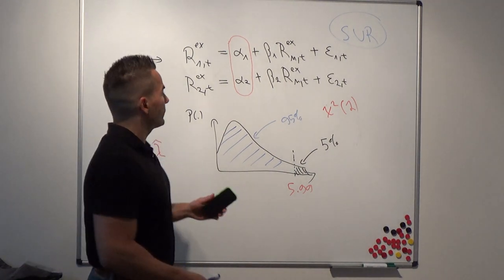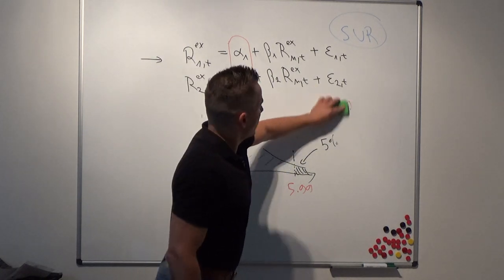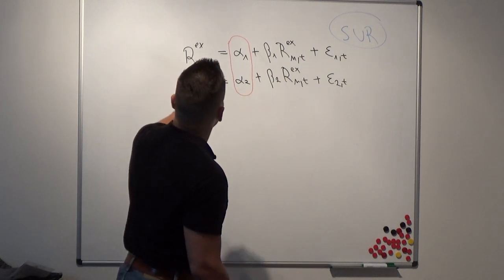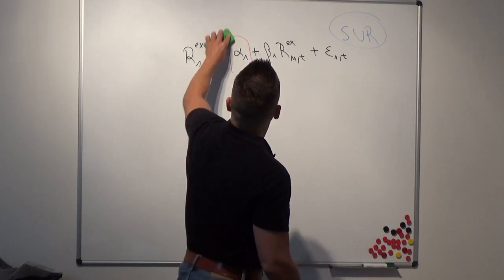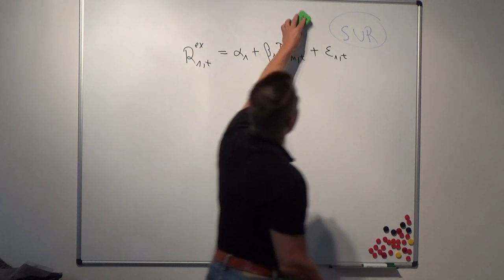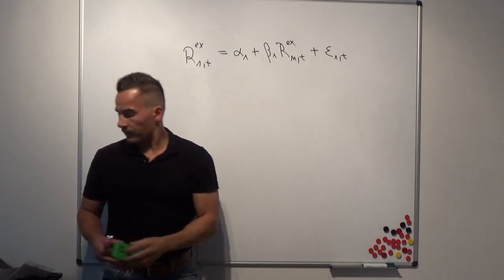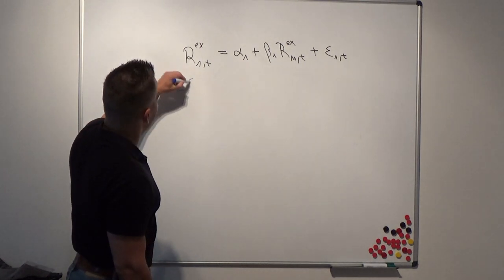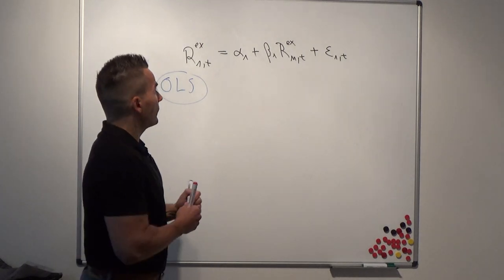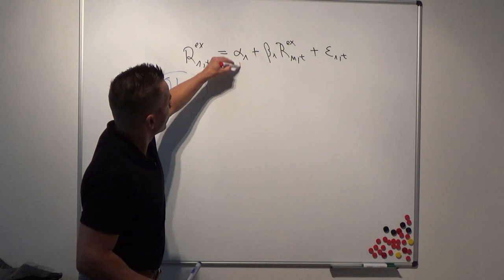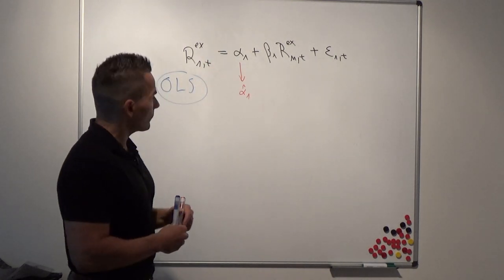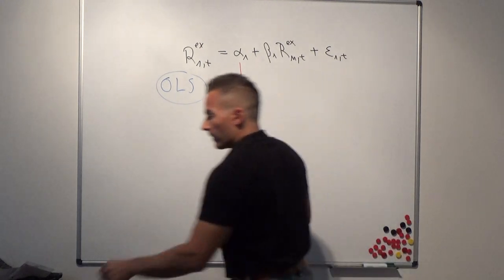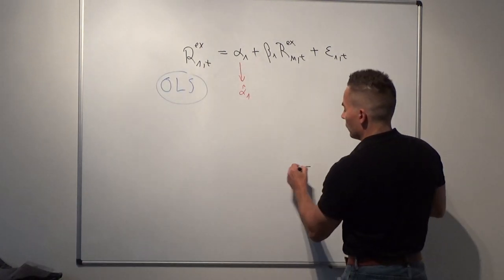If we just have one test asset, this is the simplest case. We don't need SUR anymore — we simply use ordinary least squares. In this case, we just look at the estimated α1, and we don't need a Chi-square test or an F-test. We can use a simple t-test, which you know from statistics classes.